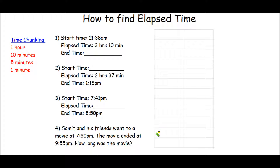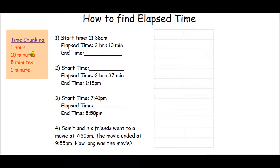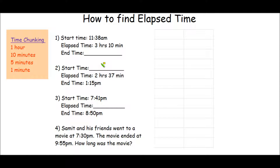Hello boys and girls. This video is going to focus on how to find elapsed time. We find elapsed time by using the strategy called time chunking, which means we're going to work with one hour at a time, ten minutes at a time, five minutes at a time, or one minute at a time until we get our answers.